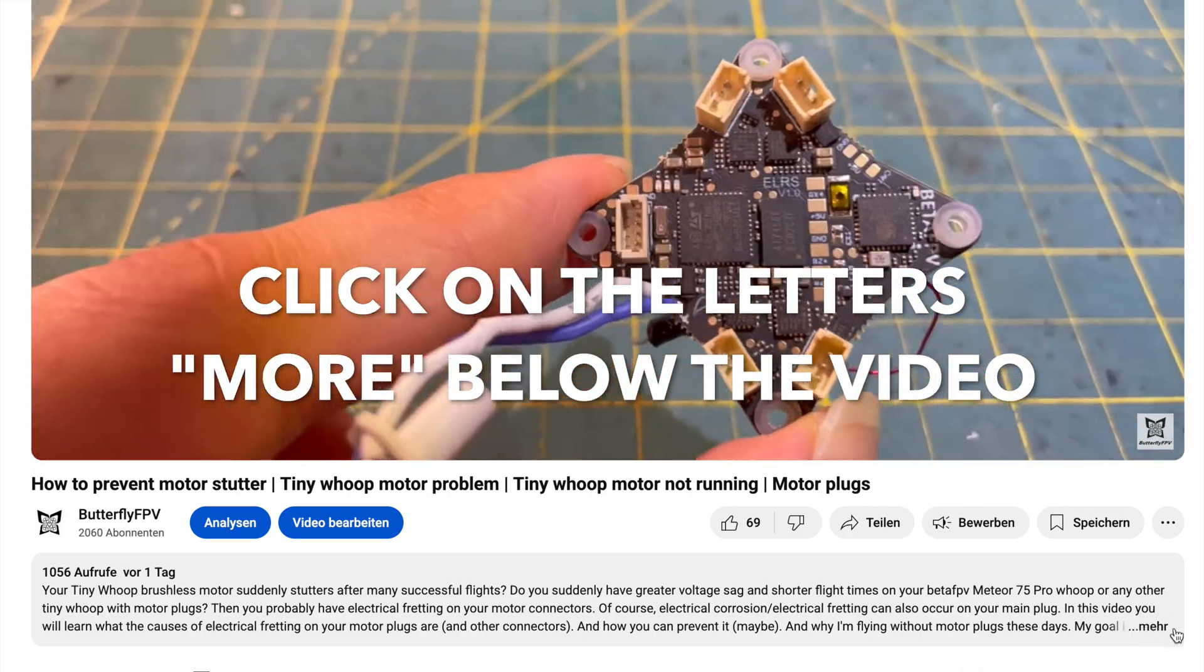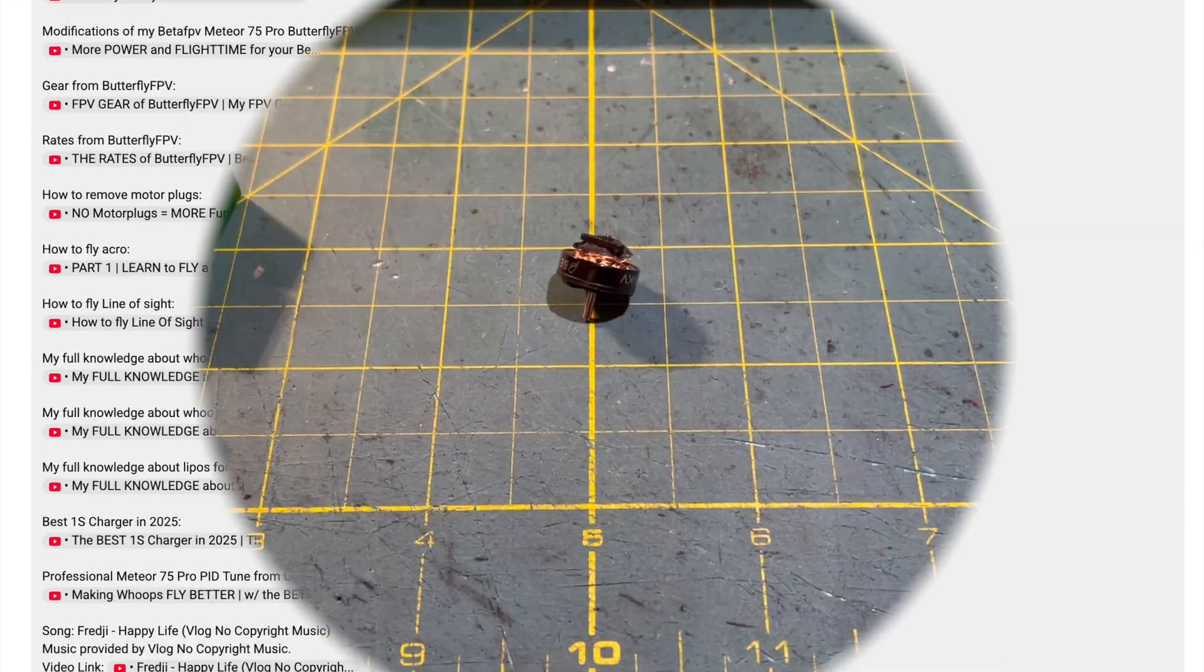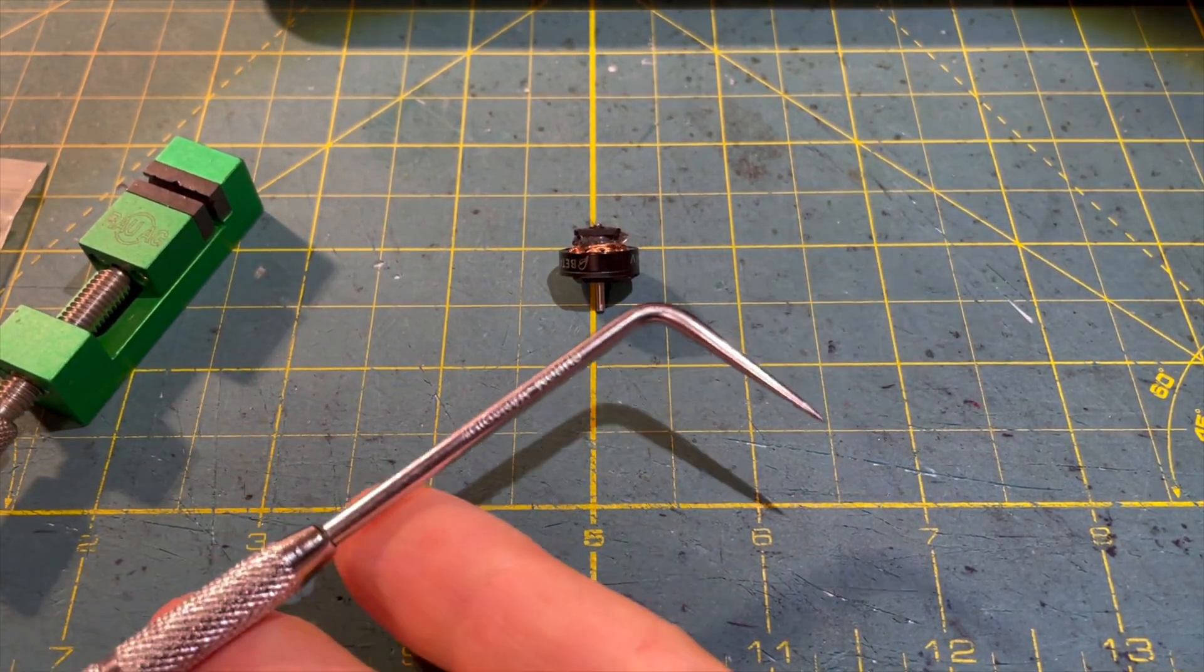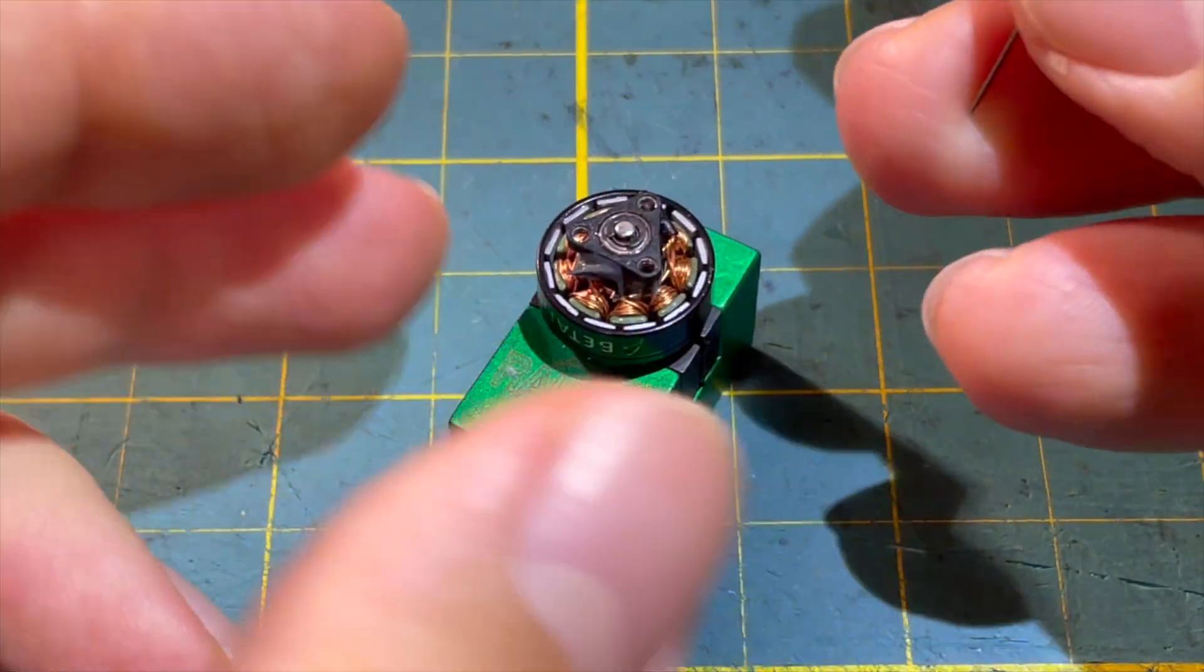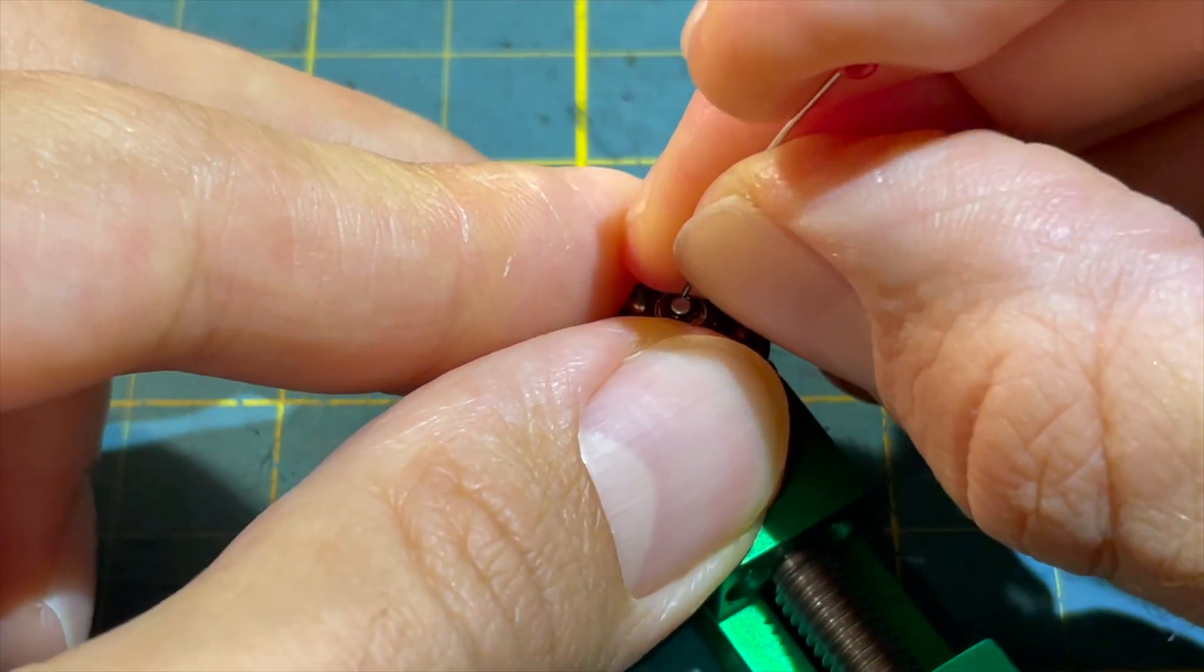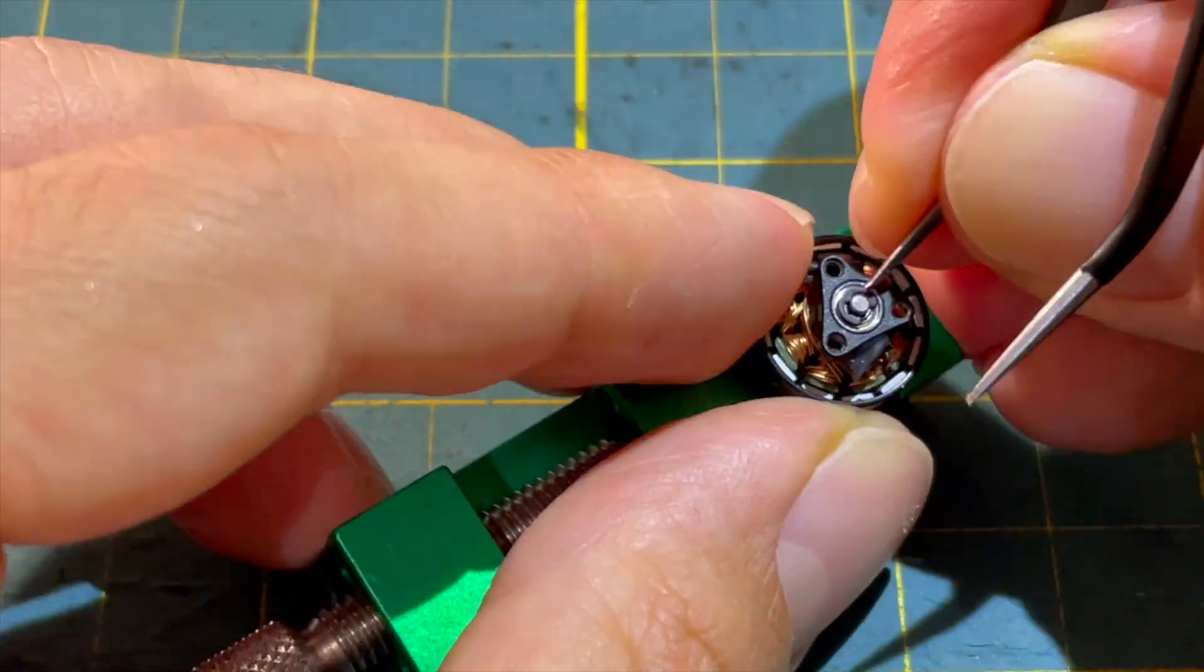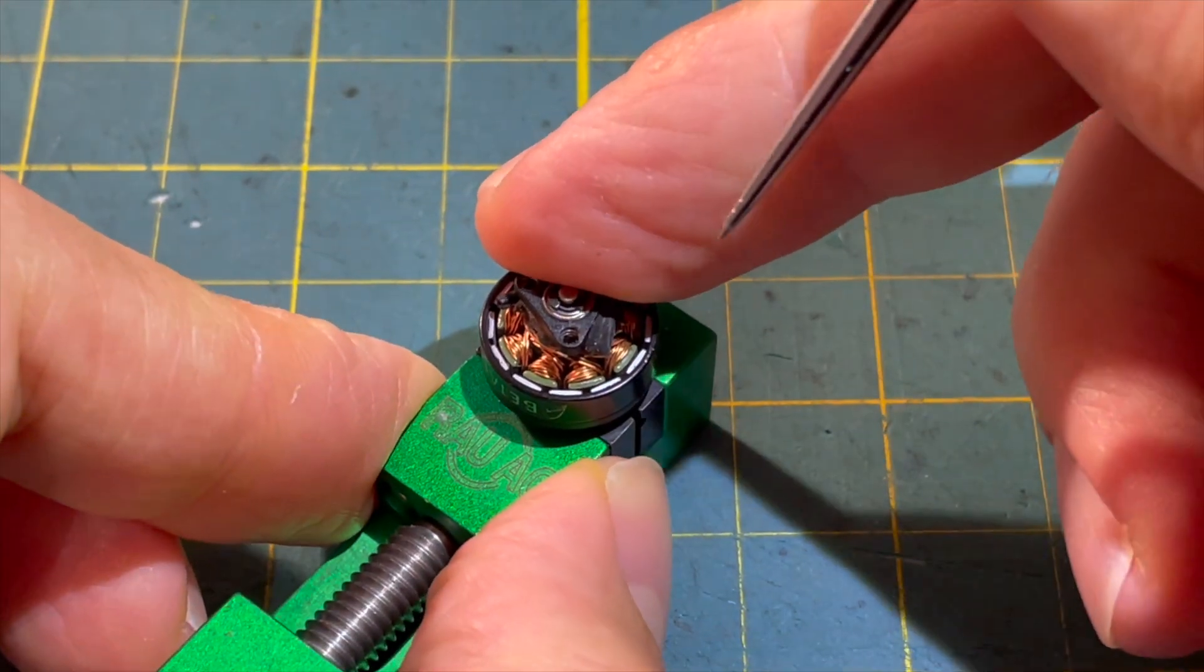The best tool for removing the larger E-clips has proven to be a scriber. This tool costs about $10 and is also useful for other tasks. Everyone should have a scriber in their workshop. I also tried using a sewing pin, but it was too soft and bent. I also tried using a pointed pair of tweezers, which worked after a few attempts, but the most convenient method is definitely with a scriber. When prying off the E-clip, it's important to place your fingertip very close to the E-clip so it can't fly off.